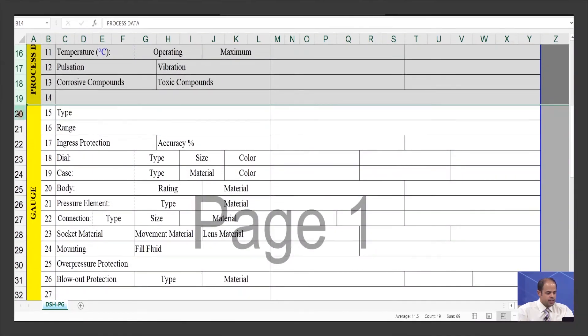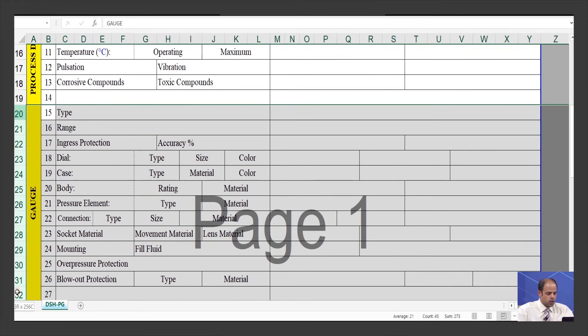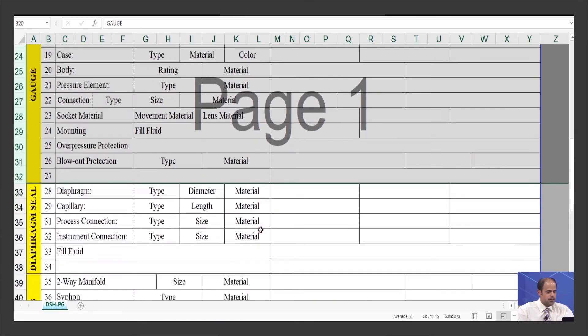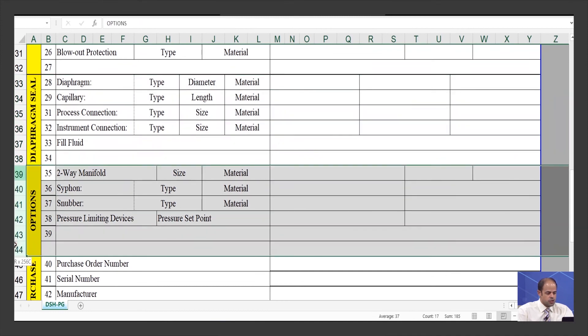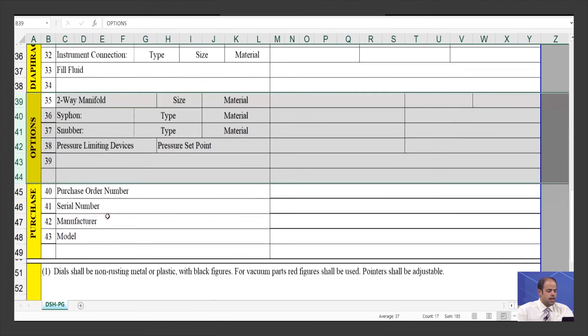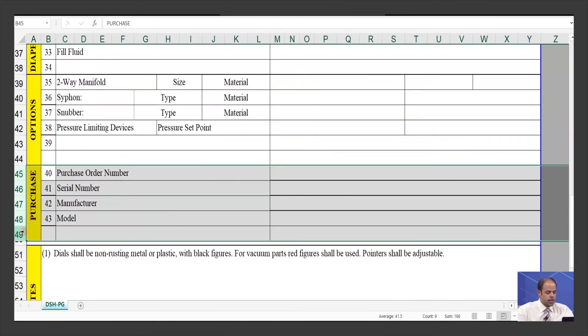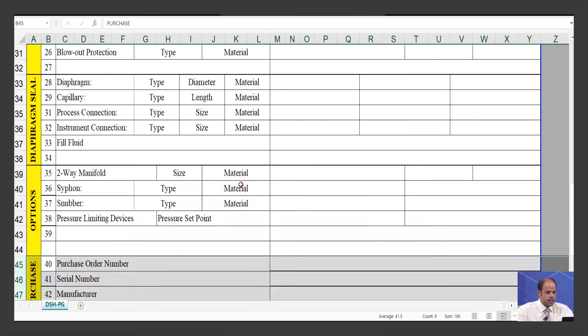Then we have the designing part for our device. As I mentioned before, this part is related to pressure gauge, so the designing items for pressure gauge must be written here. Then we have diaphragm seal as an accessory of our gauge. We have some other accessories such as snubber, siphon, or even two-way manifold. Finally, this item is related to purchase items, in which you need to mention items for purchase order, serial number, manufacturers and things like that.